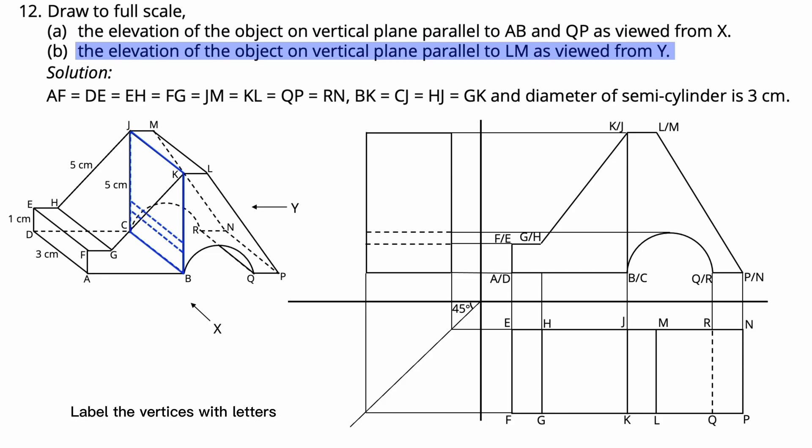Label the vertices with letters from the side of the shape: P, Q, B, N, A, R, C, D, G, F, H, E, L, K, M, J. The elevation of the object as viewed from Y is drawn.